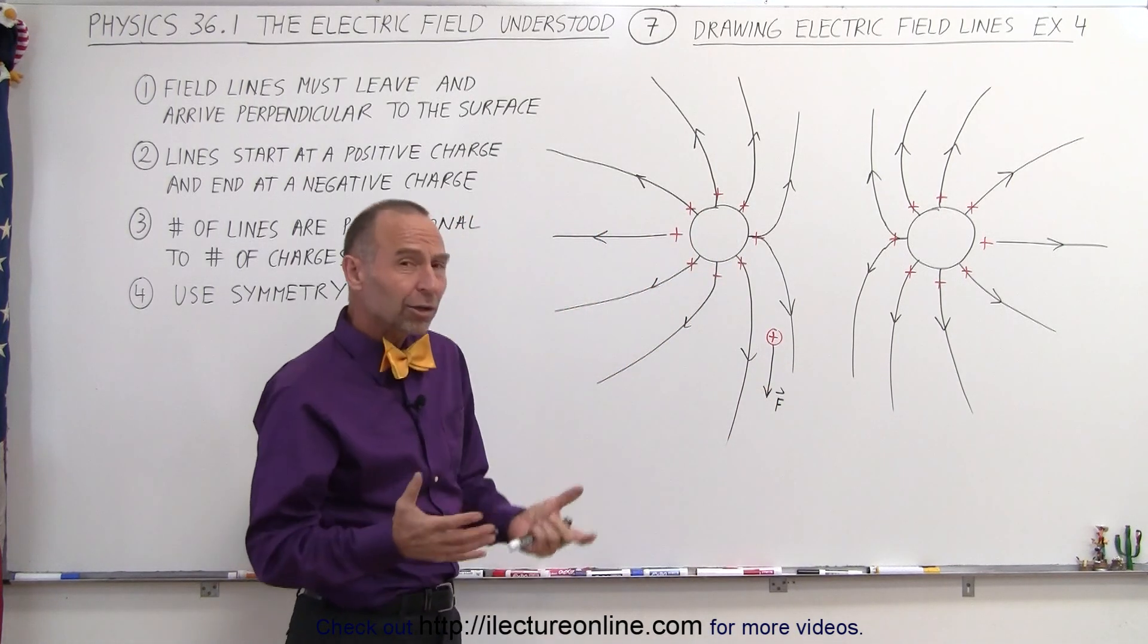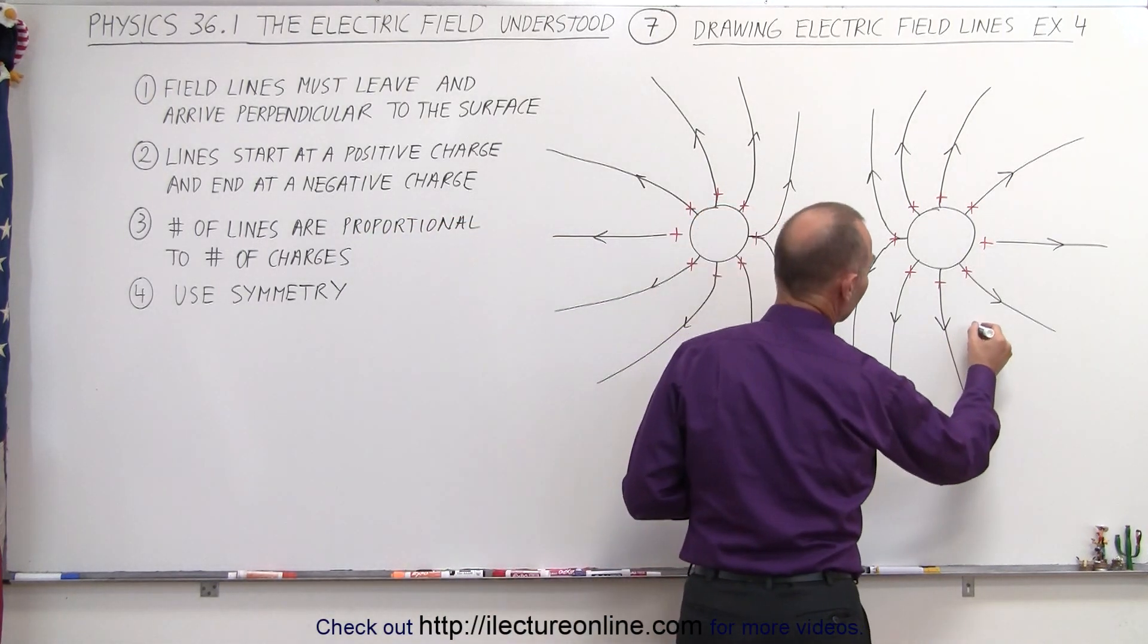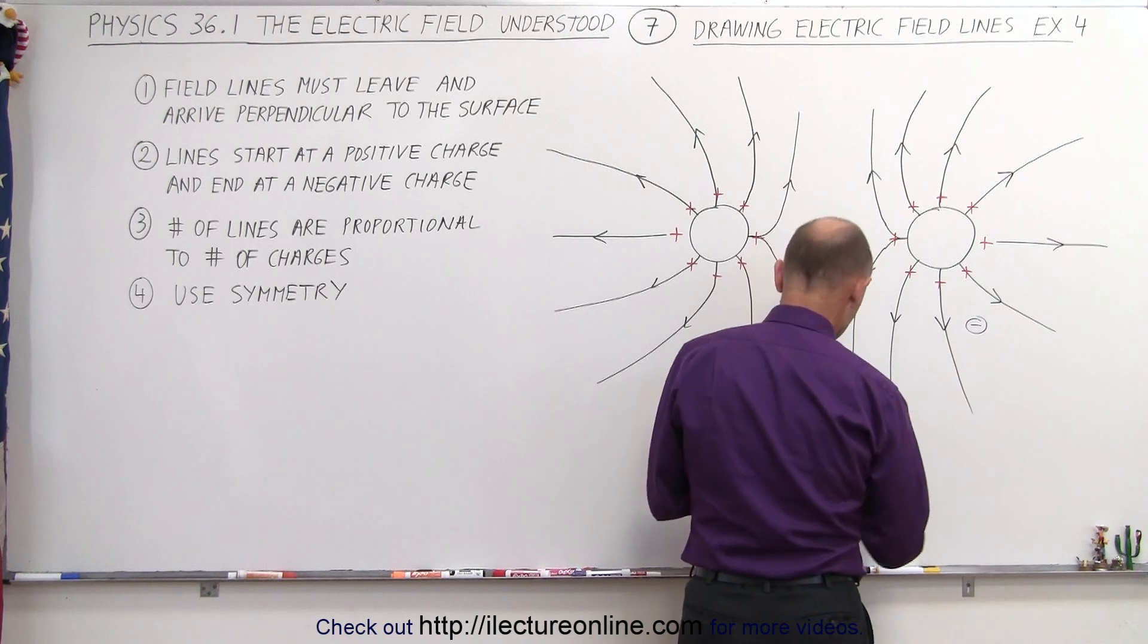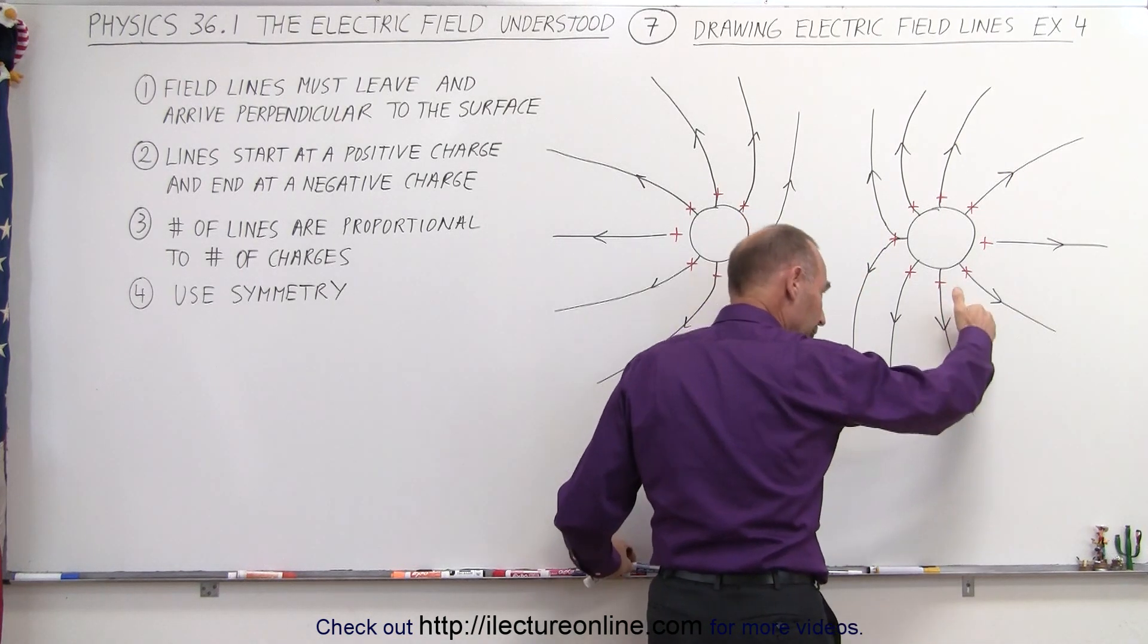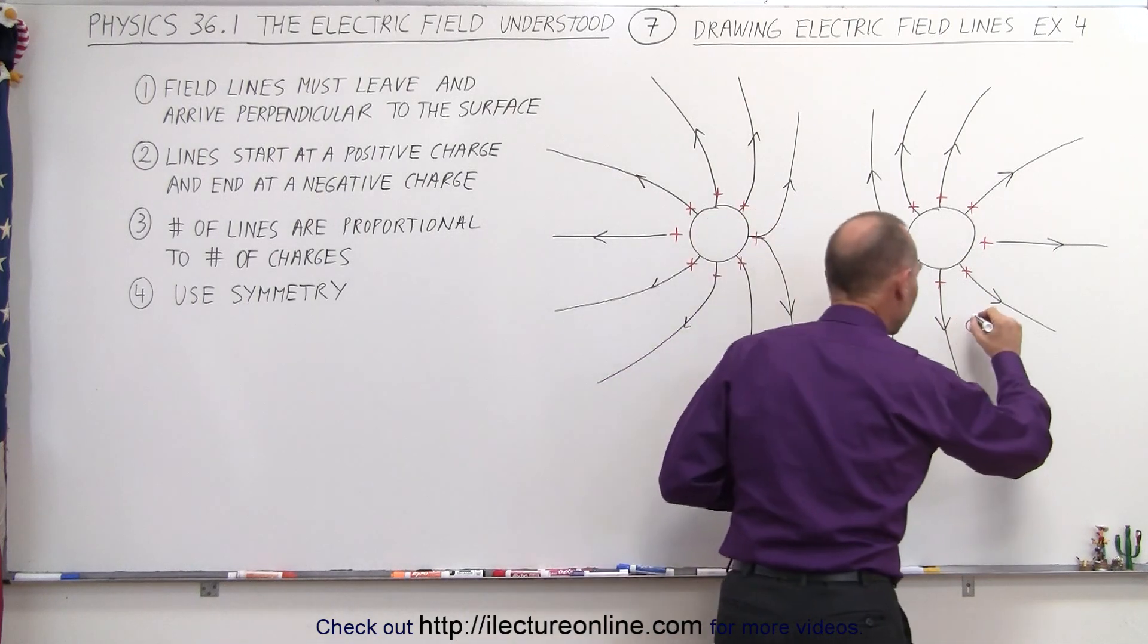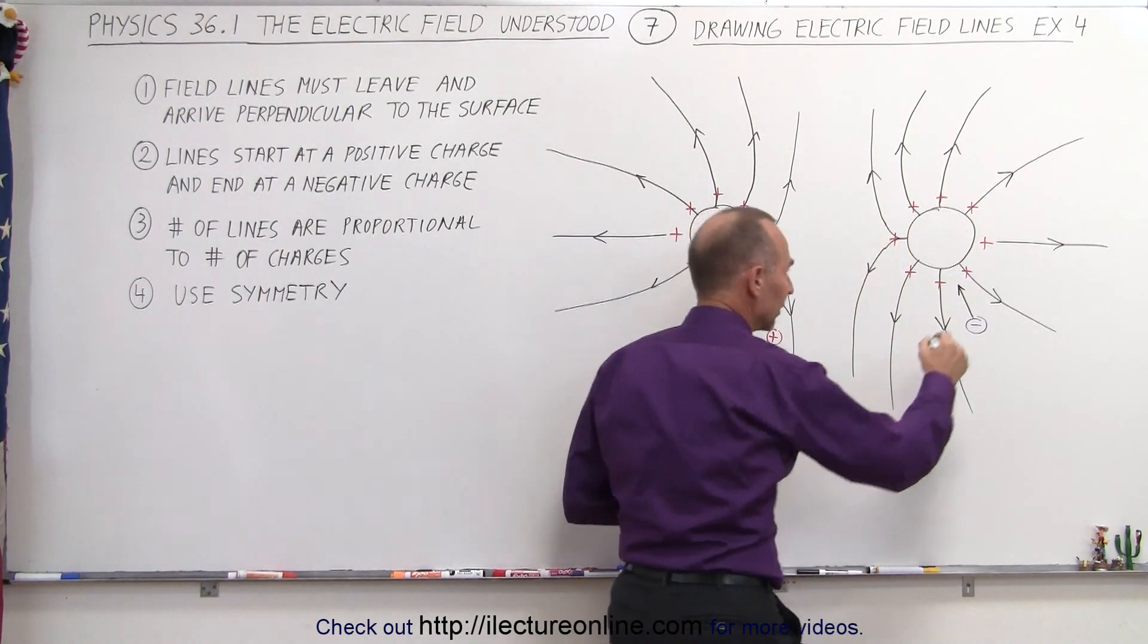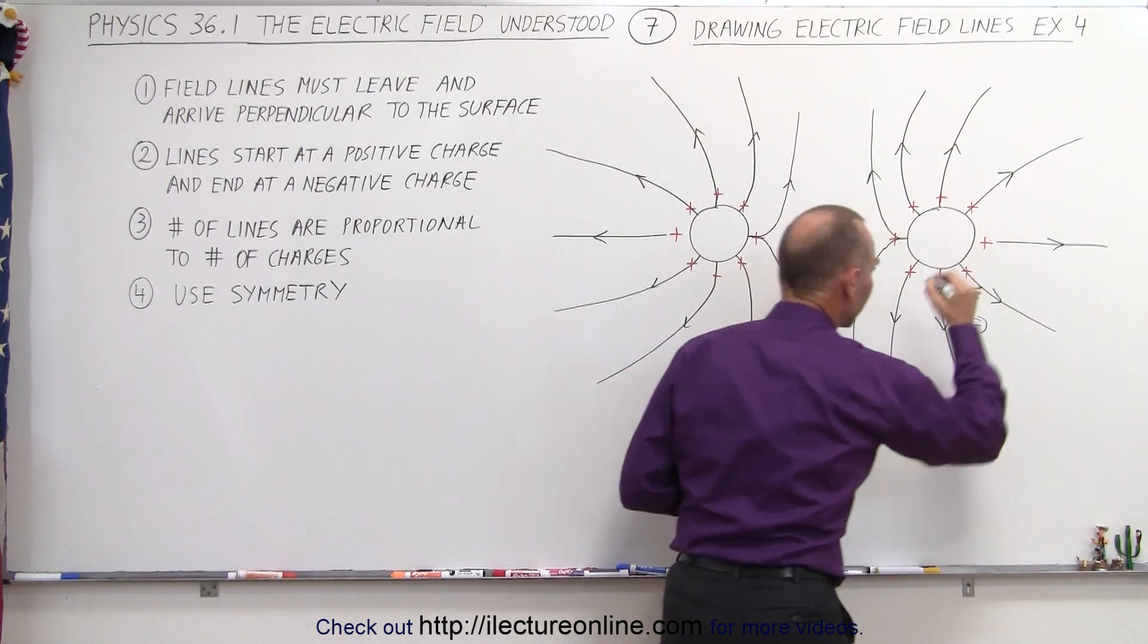And what would it look like if you were to put a negative test charge in there somewhere? So, for example, I want to put a negative test charge over here. Again, if it was a positive test charge, the force would be in this direction, but you can see that the negative test charge would have a force going in this direction. And let's go ahead and put the force symbol there.